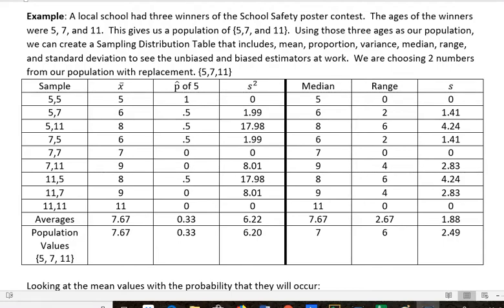Hi, it's Carleen McEvoy. I wanted to show you a simple example of a sampling distribution looking at the mean, the probability of 5 occurring, the variance, the median, the range, and the standard deviation. And then we can see why some of these are unbiased and why some of these are biased.